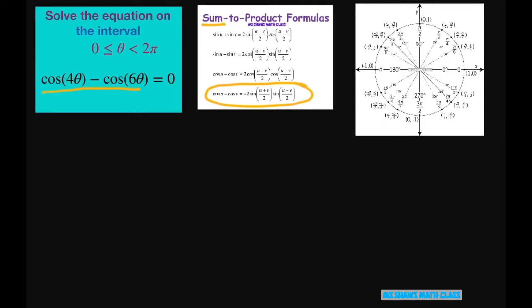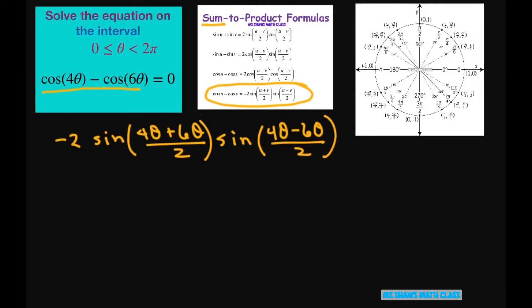Let's just rewrite this. So this would be negative 2 sine, and then we're going to have 4θ plus 6θ divided by 2 times sine of 4θ minus 6θ divided by 2. So this is 10θ. Negative 2 sine and 10θ divided by 2 is 5θ. And this is going to be negative 2θ which gives me sine of, when you cancel out the 2's, negative θ.